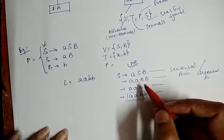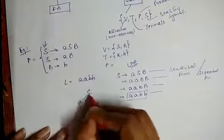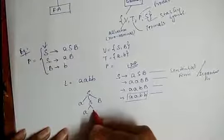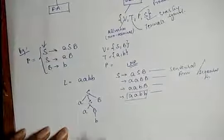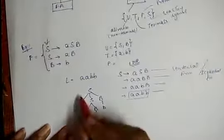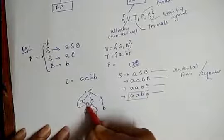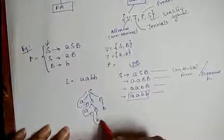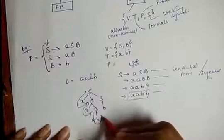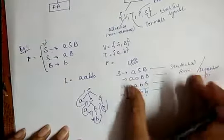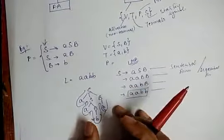The parse tree is constructed as: S derives aSB, then S derives AB, then each B derives small b. We traverse this whole parse tree from left to right and read the string: small a, then small a, then small b, then small b — giving 'aabb'. This is how we derive the particular string and construct its derivation tree or parse tree.